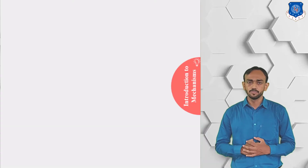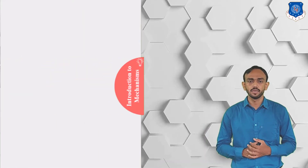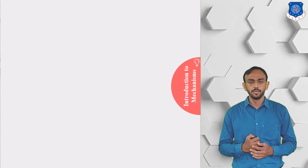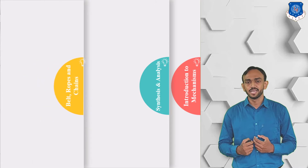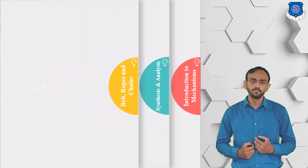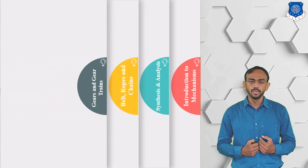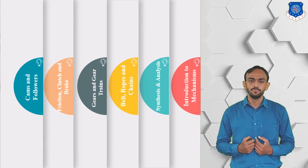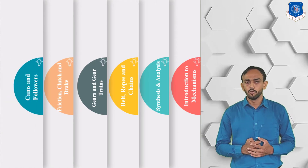Our subject covers six chapters: introduction to mechanism, synthesis and analysis of mechanism, belt, rope and chain drive, gear and gear train, friction, clutch and brake, and cam and follower.